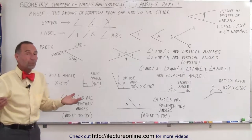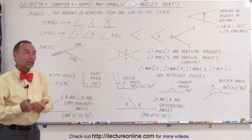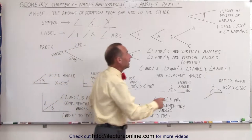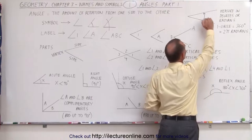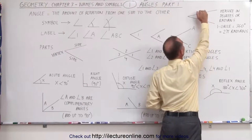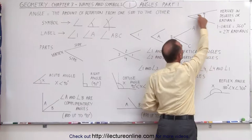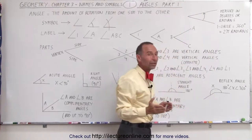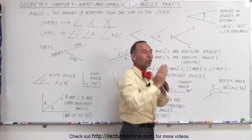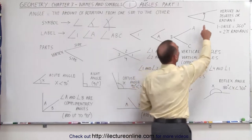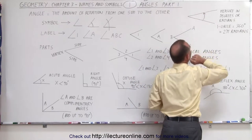So first of all, what is an angle? Well, it turns out an angle is the rotational distance between one side and the other side of the angle. These two lines here are considered the sides of an angle, and it's the angular distance, the rotational distance from one side to the other side that define the angle.